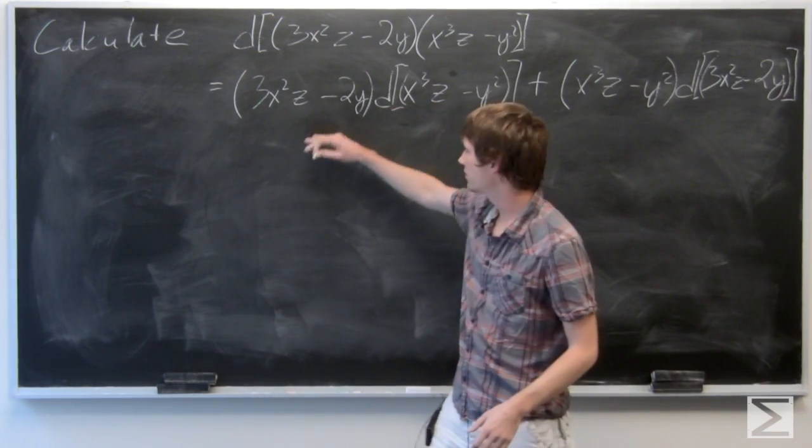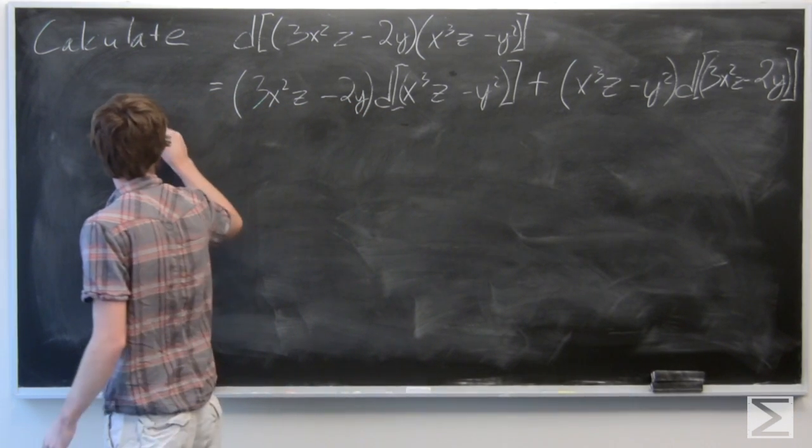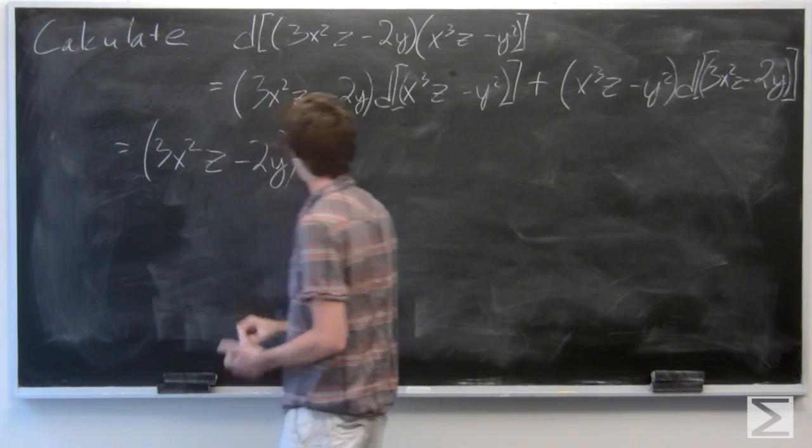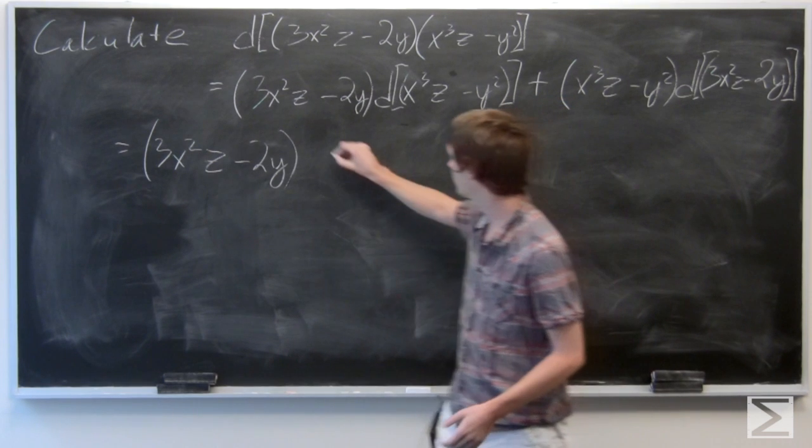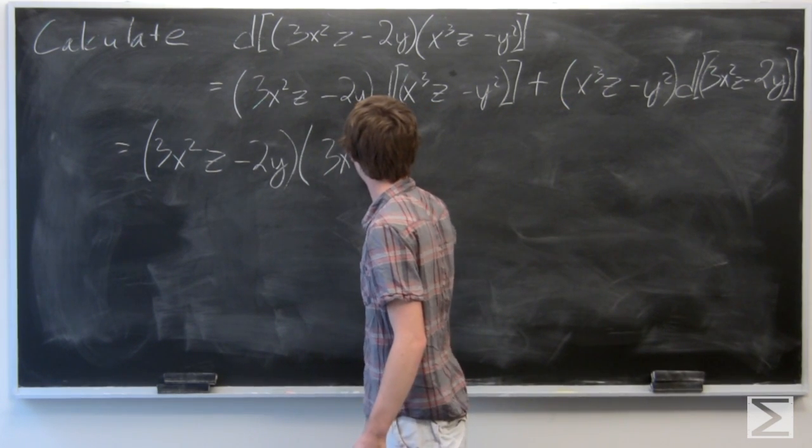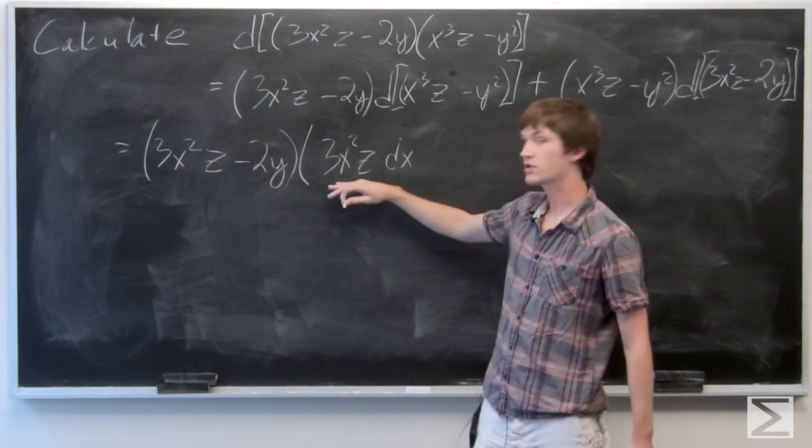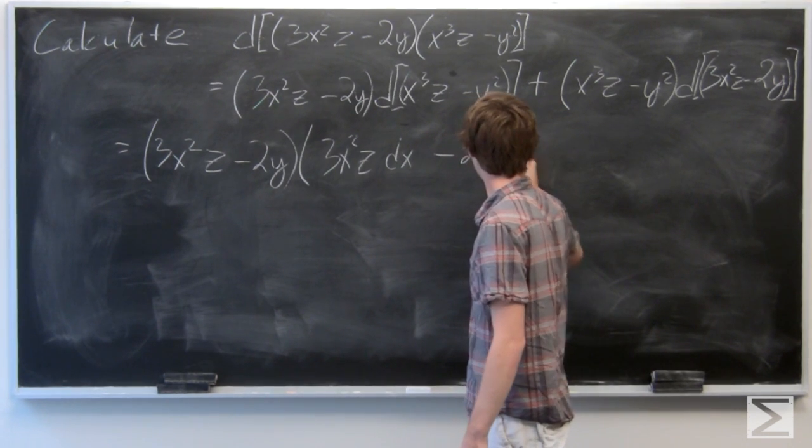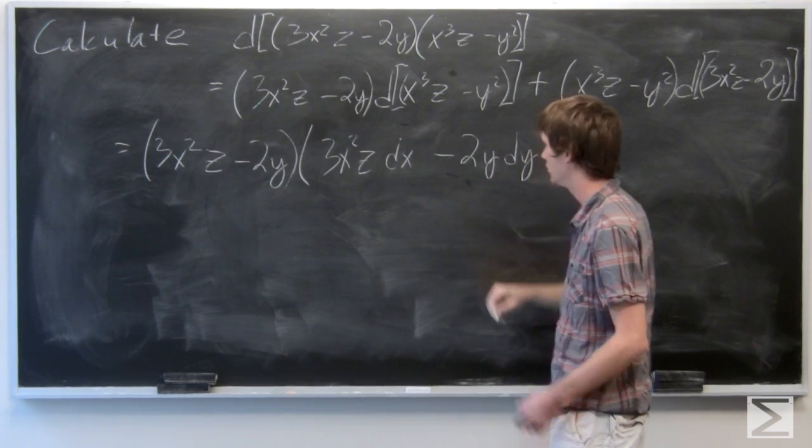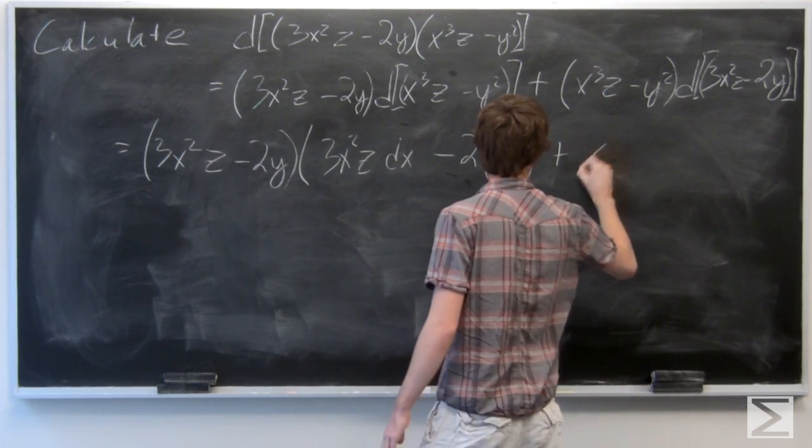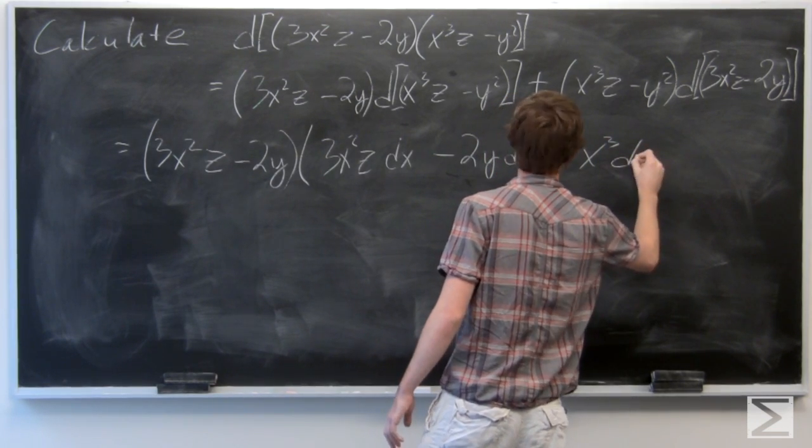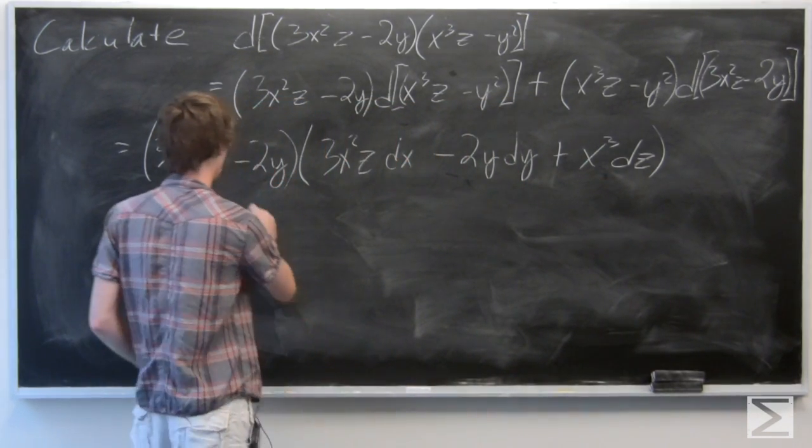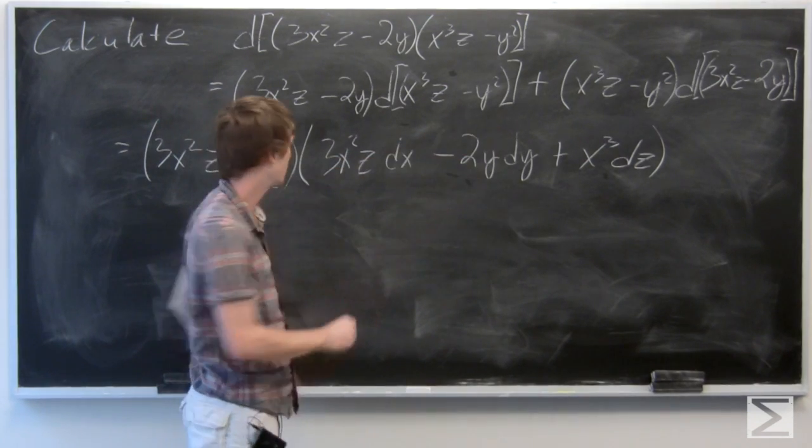So this first term is just going to remain, and then we take the differential of the second term: 3x²z dx minus 2y dy plus x³ dz. Bring that term down.